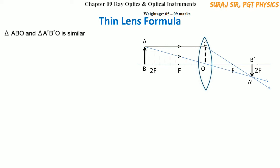You can observe these two triangles highlighted on the screen. Both are at 90 degrees and they have a vertically opposite angle at O. So they have two equal angles: angle B and angle B' (each at 90°), and angle O which is vertically opposite. Therefore these two triangles are similar by the AA test.